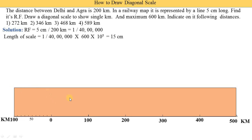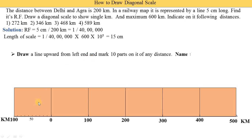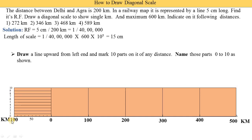We draw a rectangle to give the scale its shape, then draw vertical lines from each point. We draw a line upward from the left-hand side and mark 10 parts on it. If the height is 20 mm, we divide it into 10 equal parts of 2 mm each. We name those parts 0 to 10, which also indicate kilometers.